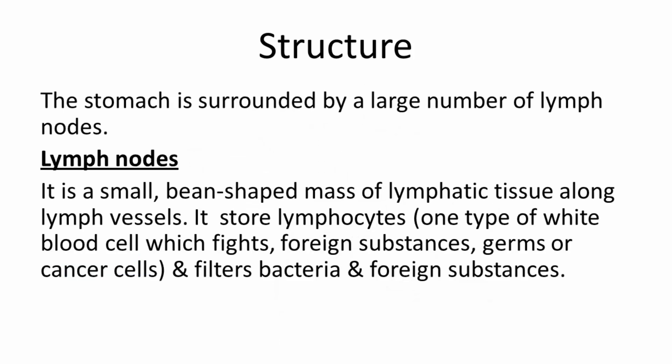The stomach is surrounded by a large number of lymph nodes. Lymph nodes are small, bean-shaped masses of lymphatic tissue along lymph vessels. They store lymphocytes — a type of white blood cell which fights foreign substances, germs, or cancer cells — and filter bacteria and foreign substances.